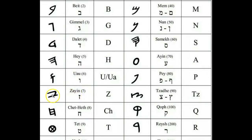The next letter is Zayan, which represents weapon, plow, or to cut down. You can see it in the modern, and this is how it looks in the Paleo-Hebrew, which makes the Z sound.